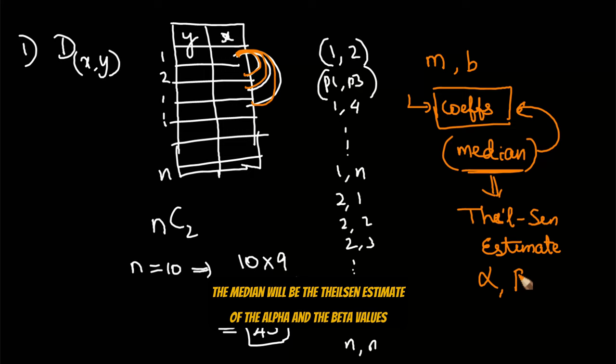The only drawback with this approach is as the number of data points increase, the number of possible combinations or pairs of records increases drastically. That makes it computationally intensive.